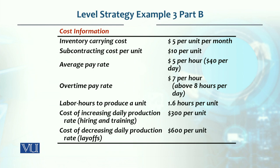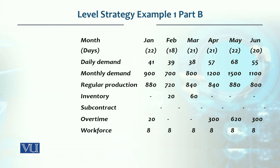Overtime rate is $7 per hour, and this payment applies when a worker works more than 8 hours. Labor hours required to produce one unit is 1.6 hours per unit. Hiring cost and layoff cost are not being used in this plan, so they are not included here.